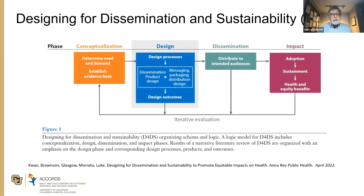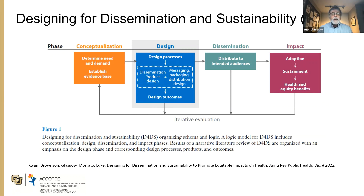One of our key mantras in D&I science is designing for dissemination, sustainability, and equity. Often we get approached by people when they're in the fifth year of a program and have an effective intervention and then want us to work with them on dissemination. We're glad to do that, but honestly you're only going to get half or less of the impact if you don't think about these issues from the beginning. It's never too early to think about what's going to be generalizable and feasible for settings.